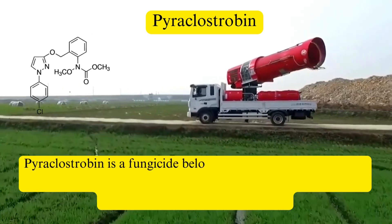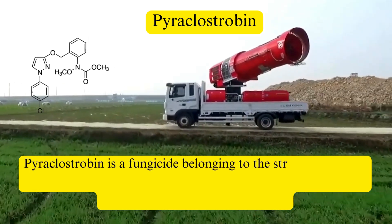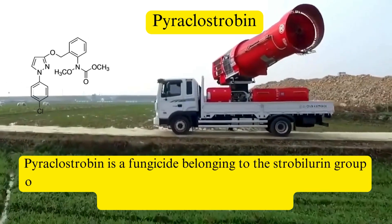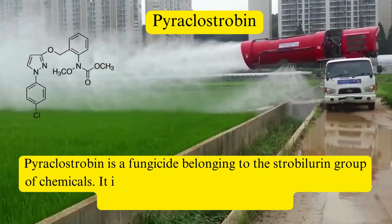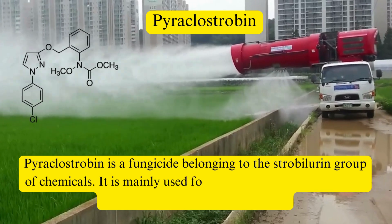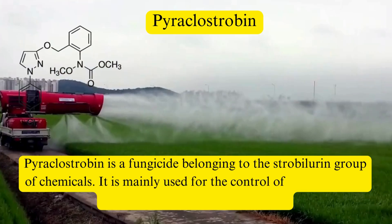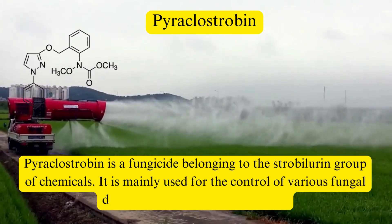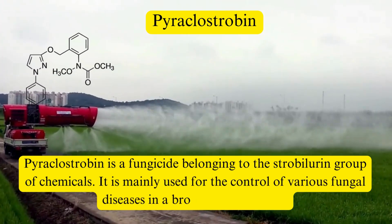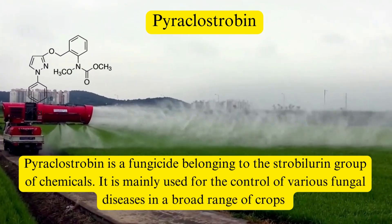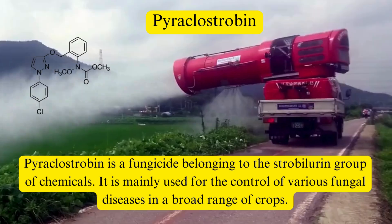Pyroclostrobin is a fungicide belonging to the strobilurin group of chemicals. It is mainly used for the control of various fungal diseases in a broad range of crops.